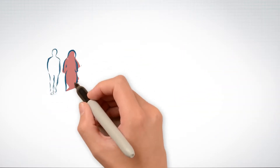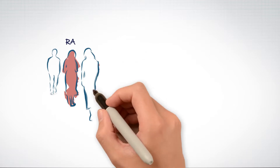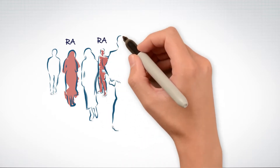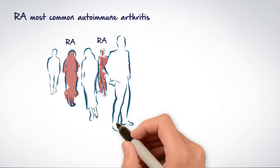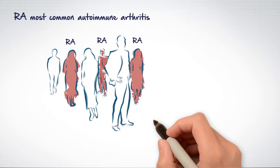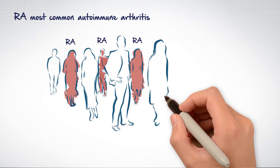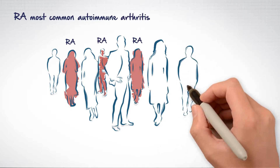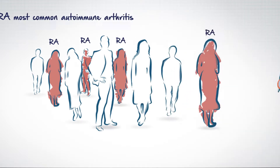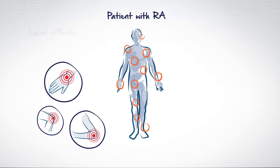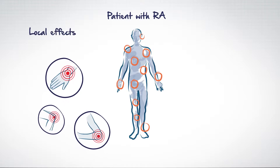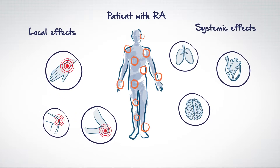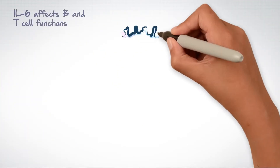Among autoimmune diseases, rheumatoid arthritis, or RA, is the most common type of autoimmune arthritis. It is triggered by a faulty immune system and manifests itself through both local effects in the joint and systemic effects around the body.